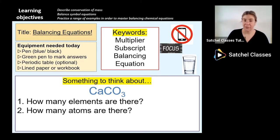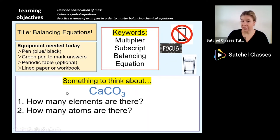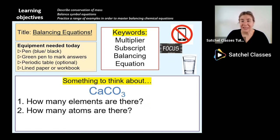Have a look at this - it's calcium carbonate. I want you to have a think about: how many elements are there, and how many atoms are there? These are two different questions and it's really important you understand the difference between these key terms. How many different elements are there? Have a think and be ready with your answer.